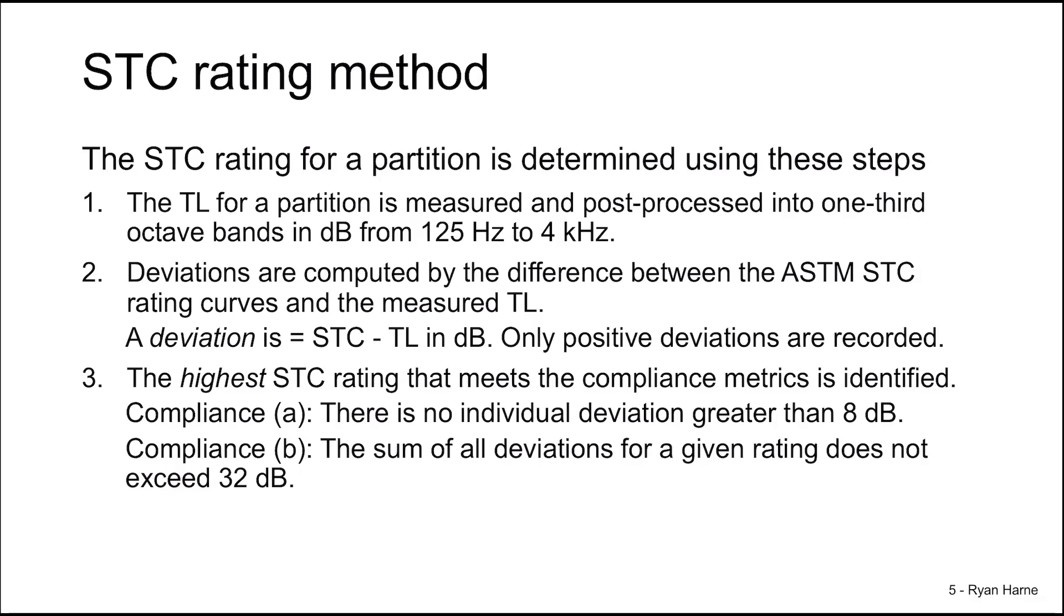Now that we have our deviations, we find the highest STC rating that meets two compliance metrics. First metric: there is no individual deviation that is greater than eight decibels. Secondly, the sum of all deviations from 125 hertz to four kilohertz in the one-third octave bands must not exceed 32 decibels. The highest STC rating that satisfies this for our measured TL is the STC rating for the partition.